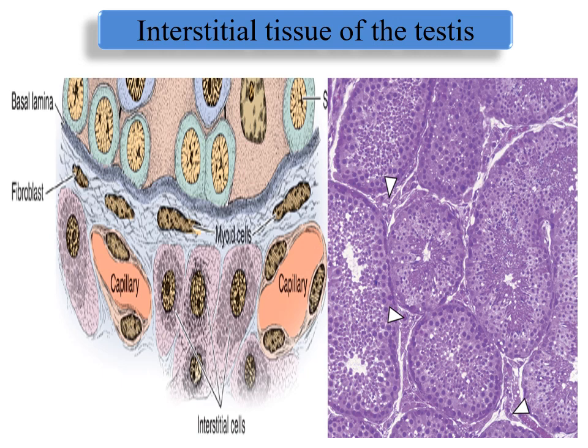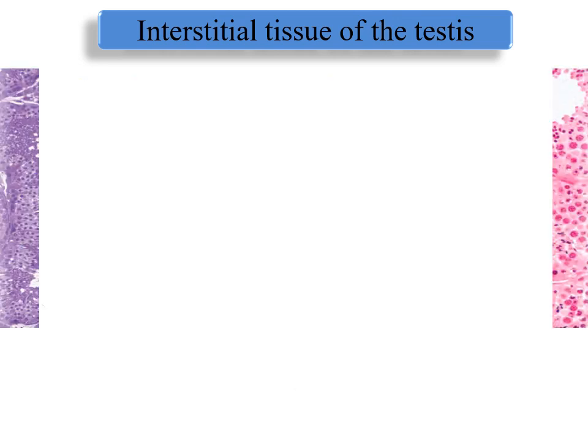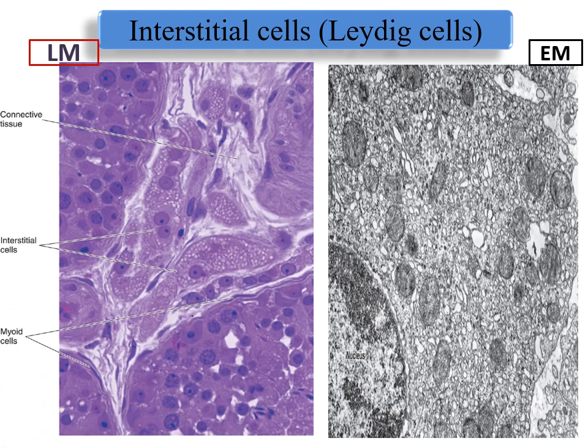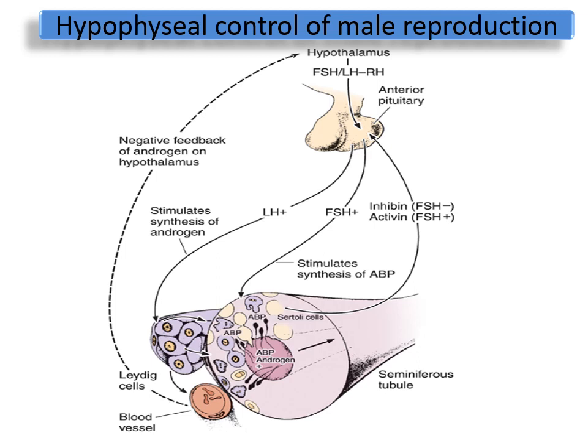In the interstitial tissue between the seminiferous tubules, there are myoid cells and interstitial cells of Leydig. The myoid cells are present for contraction to help passage of sperm. The interstitial cells of Leydig secrete testosterone into the fenestrated blood capillaries. They appear pale, vacuolated, and basophilic with active nuclei. By electron microscope they contain smooth endoplasmic reticulum, mitochondria, and lipids. They are under the effect of LH (interstitial cell stimulating hormone).